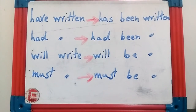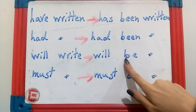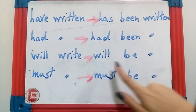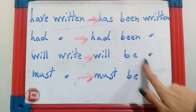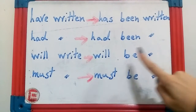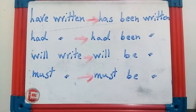The next one is simple future: 'will write.' If you want to change simple future to passive, the structure is: will + be + past participle — so 'will be written.' The fixed part is 'will be,' followed by the past participle of whatever verb you want to make passive.